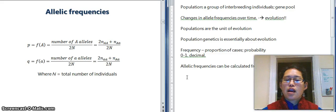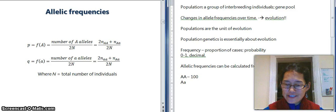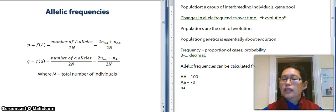So let's say the number of big A, big A individuals is one hundred. The number of heterozygous individuals is, let's say, seventy. The number of little a little a individuals is 30.